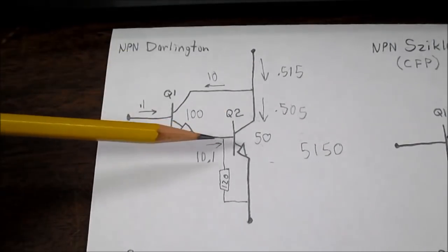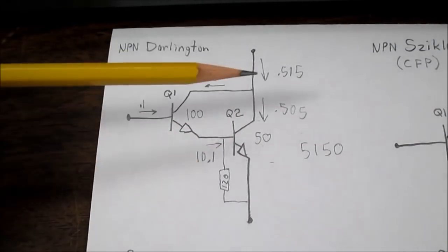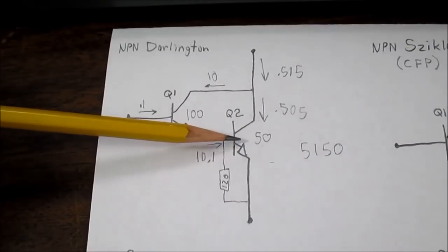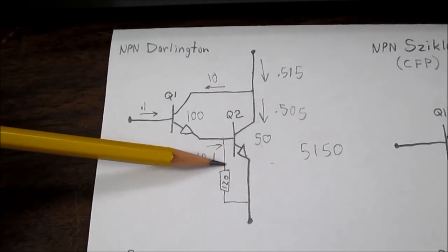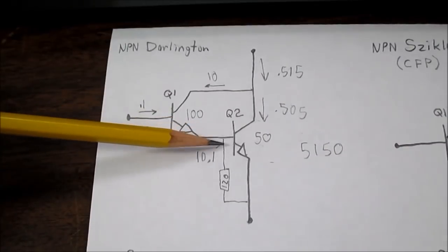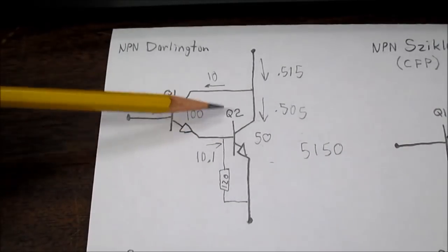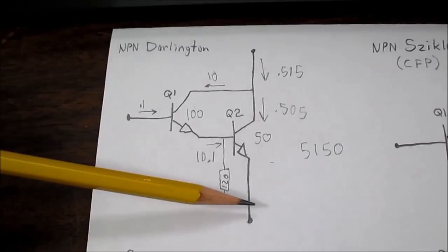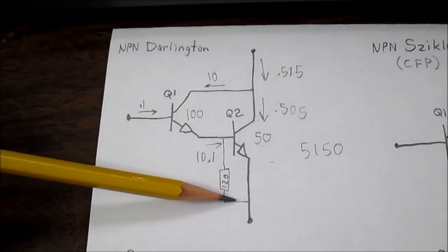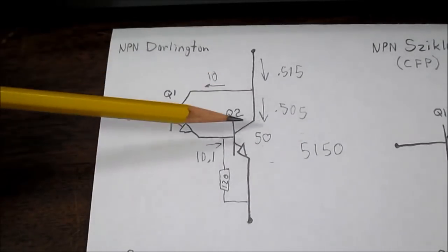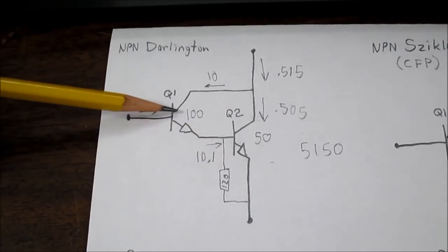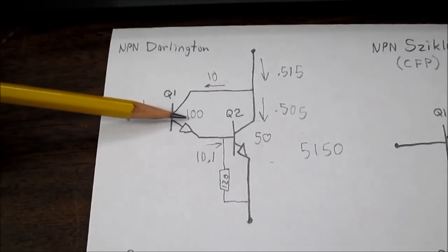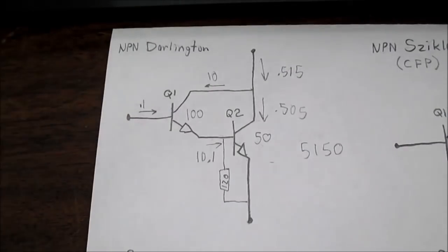But it does create another interesting situation. This transistor is not going to turn on until the voltage drop across this resistor is 0.65 volts. So we have to push enough current through this resistor to get that voltage drop. In other words, this transistor is going to stay turned off, and this transistor is going to be doing all the work at low currents. Let's check it out.